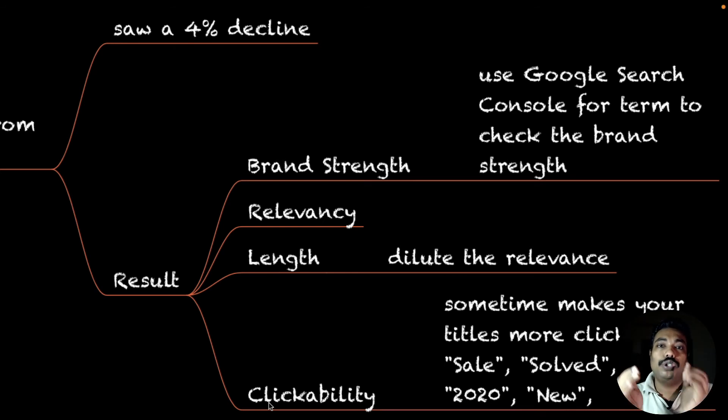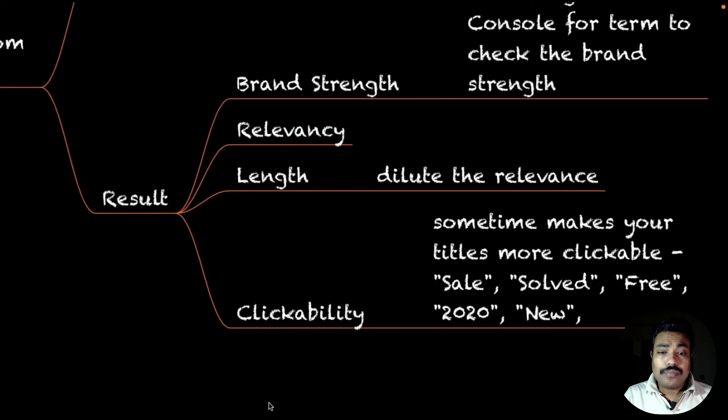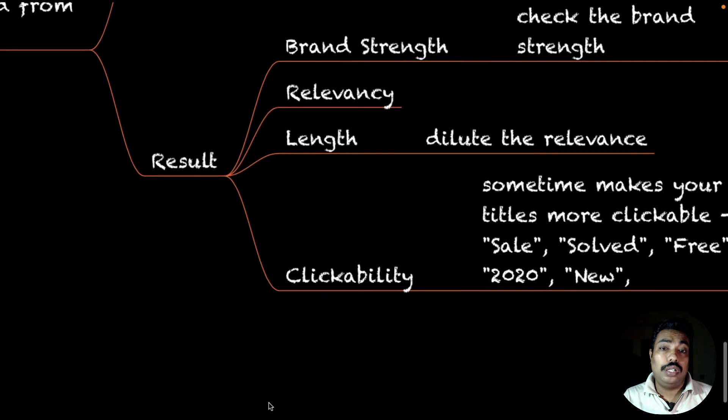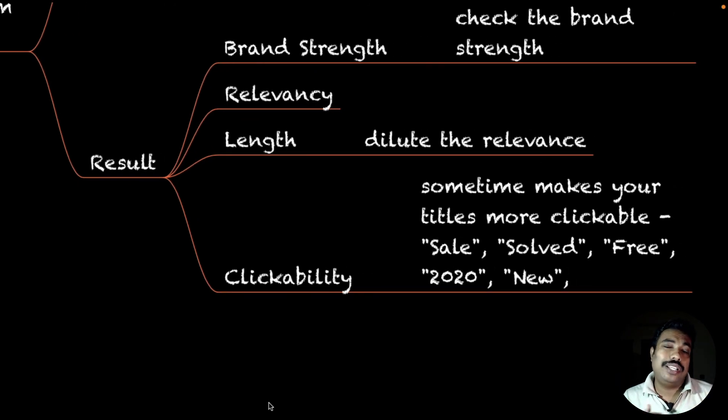They also tested clickability. When we use these boilerplate segments, sometimes it creates clickability. Like Sale, Solved, Free, 2020, New. Basically for blogging, when they use these in all blog posts, that actually helped them get clickability.